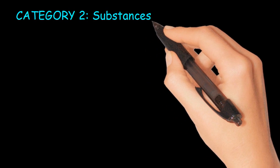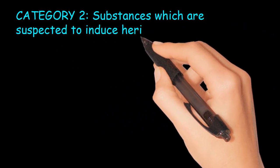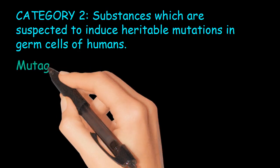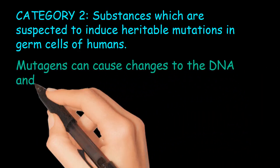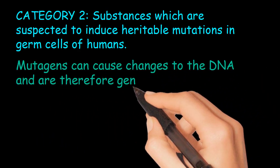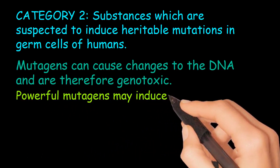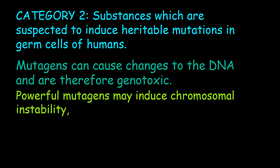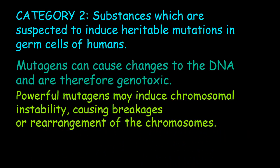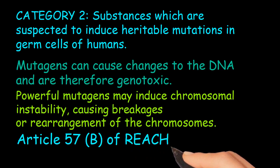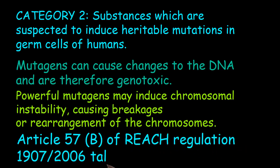Category 2: Substances suspected to induce heritable mutations in germ cells of humans. Mutagens can cause changes to the DNA and are therefore genotoxic. Powerful mutagens may induce chromosomal instability, causing breakages or rearrangement of chromosomes. Article 57B of REACH Regulation 1907/2006 addresses mutagens.